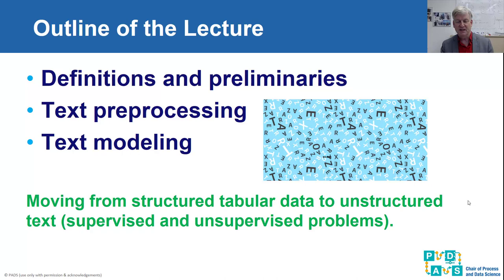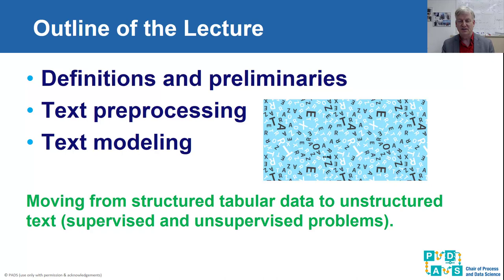Today we will focus on definitions and preliminaries: what is NLP, what is text mining. We will mostly talk about text pre-processing and end with being able to represent text in a way that allows applying data mining techniques. We will turn documents into vectors that can be used for information retrieval, decision trees, clustering, etc. We are moving from tabular data to unstructured text, but ultimately we will try to turn that unstructured text into vectors that we can feed to a neural network.